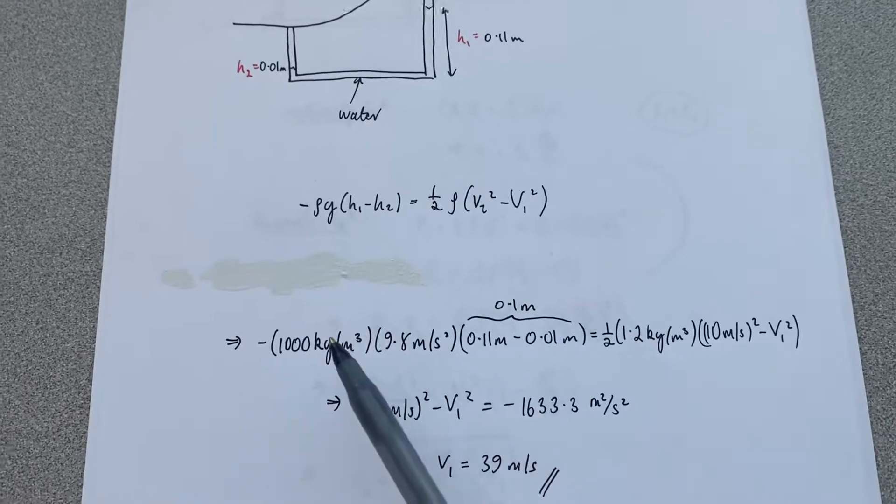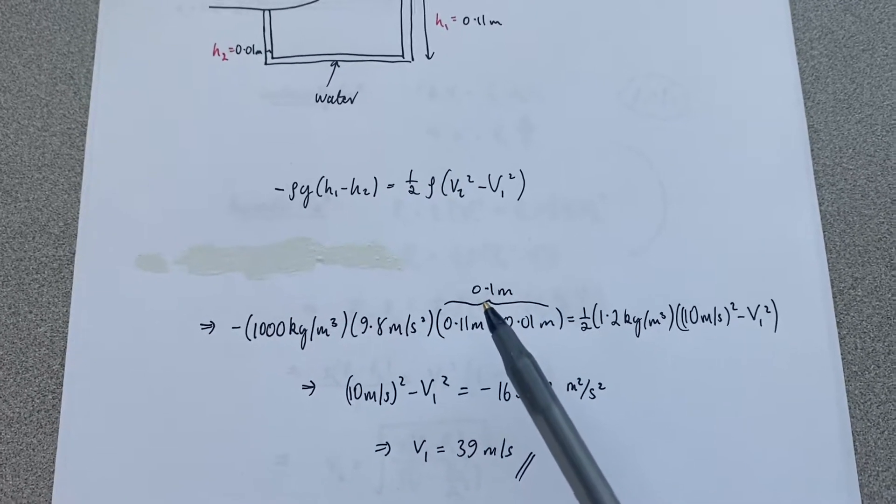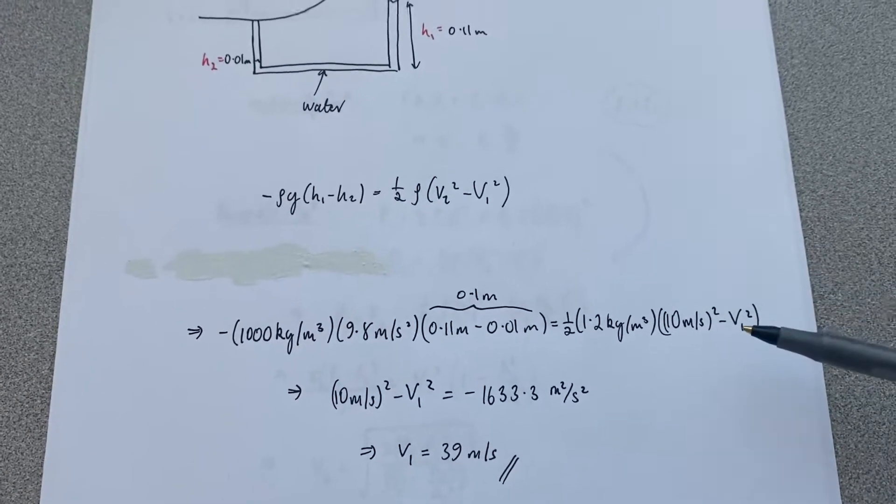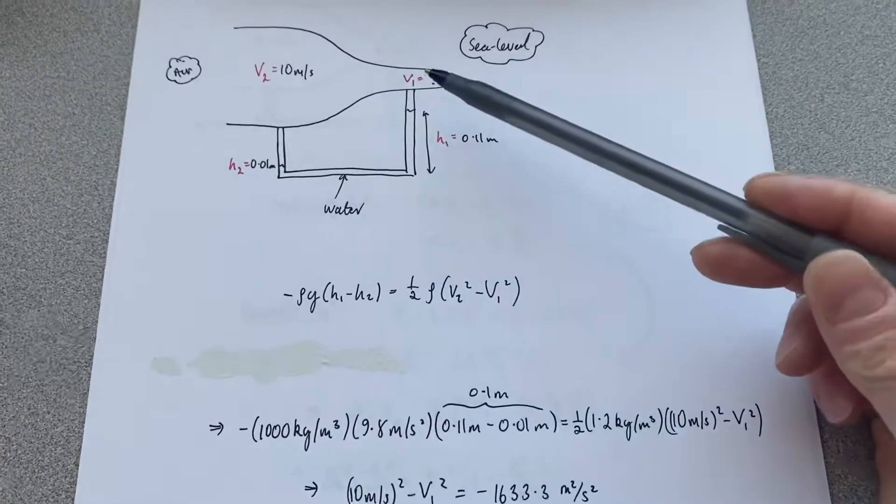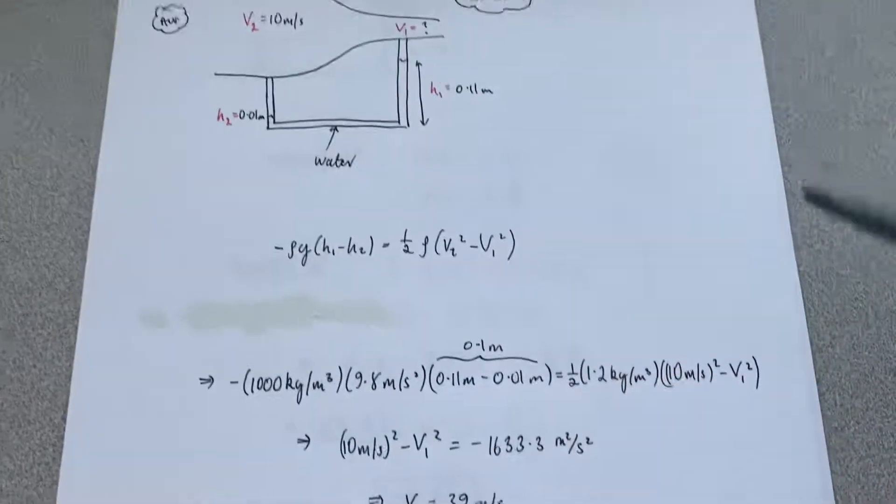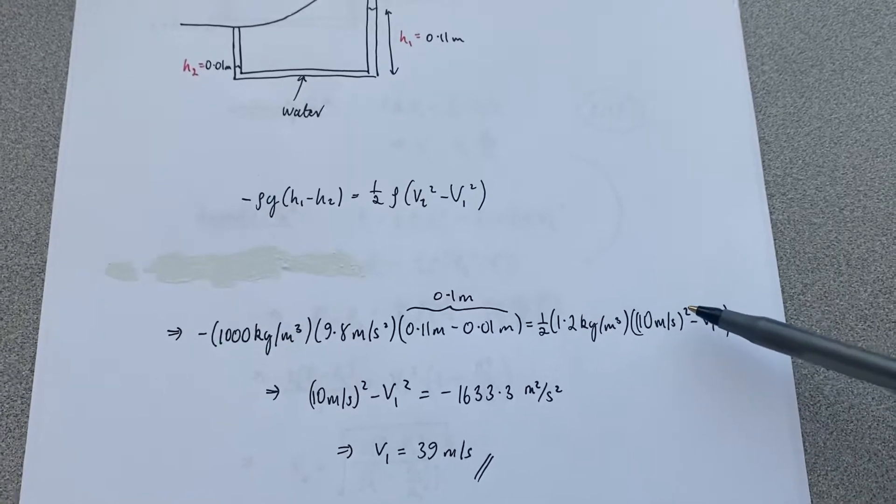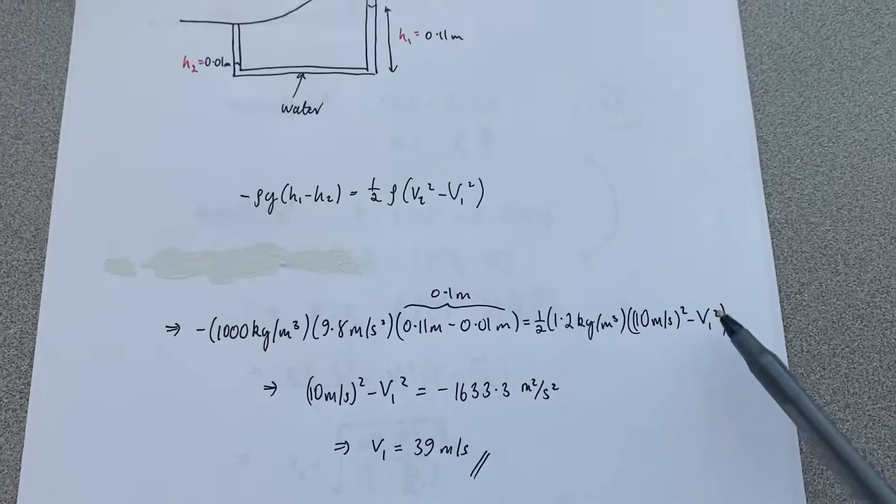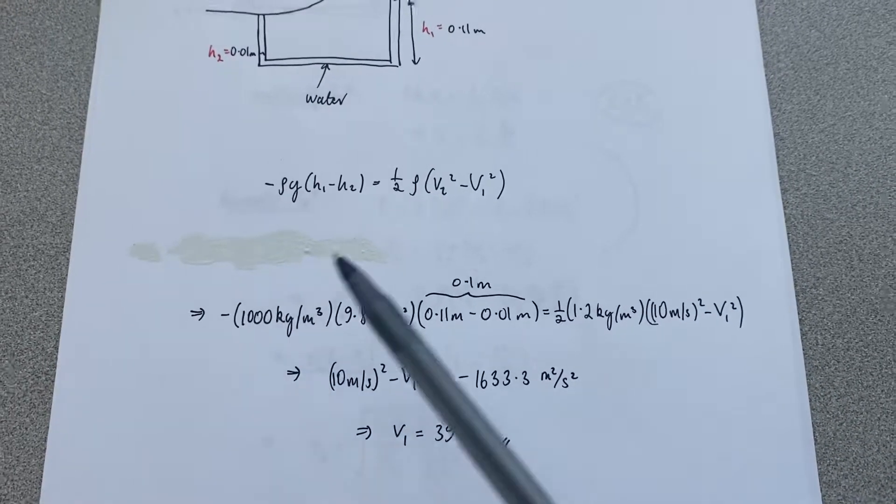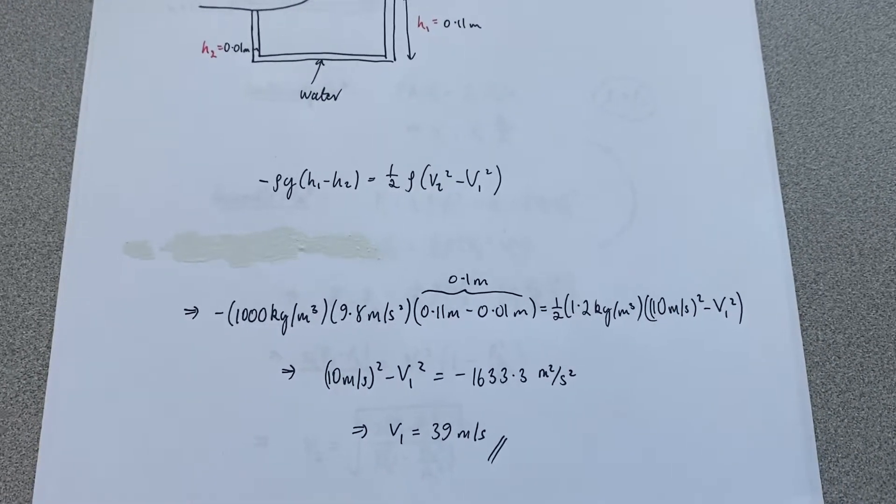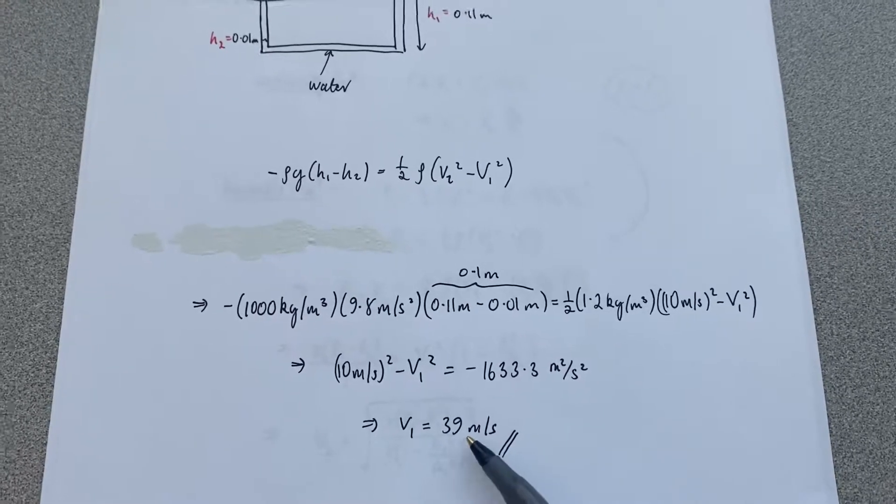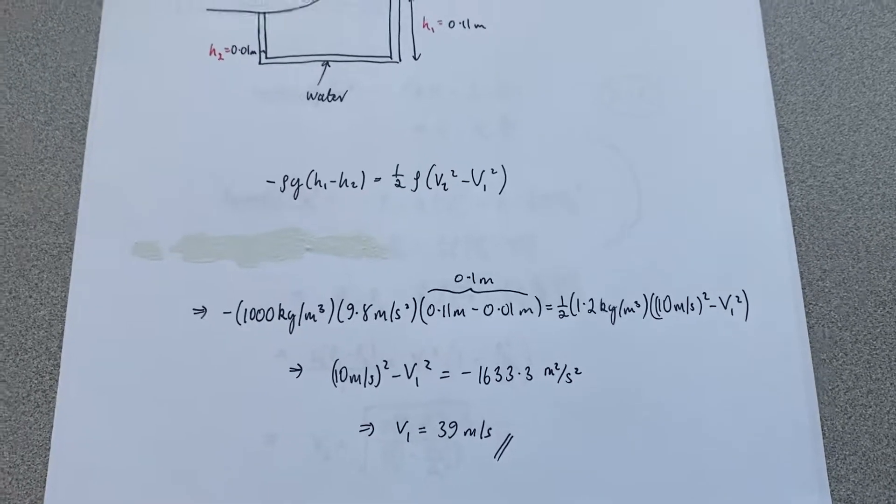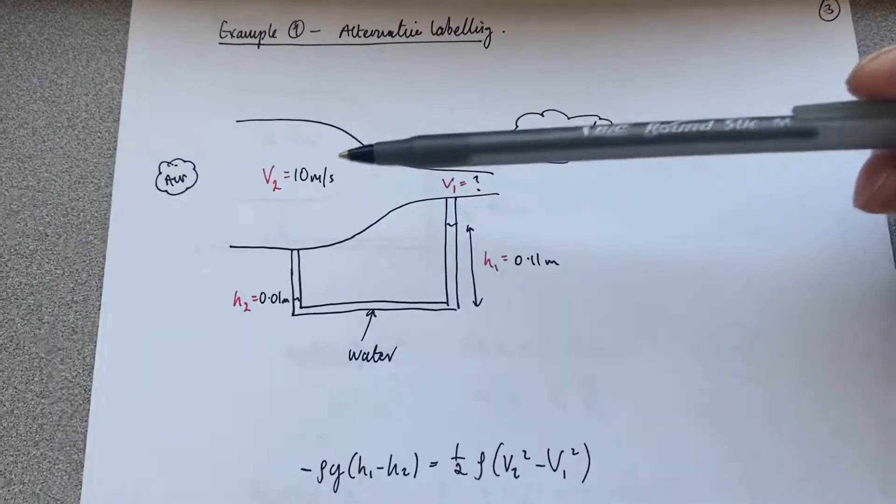So now this is positive, which means the whole left-hand side is negative. But remember, of course, we're expecting v1 now, which is this, to be faster than this. So we're expecting this to be negative, and therefore this side is negative too, so that the negative sign on the left-hand side will cancel with the negative sign on the right-hand side, and we end up with the same result.